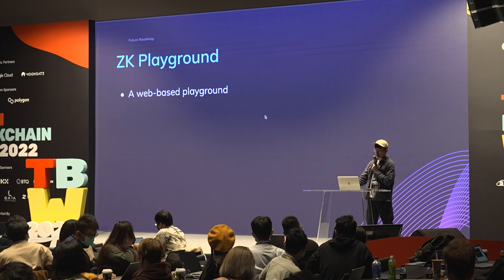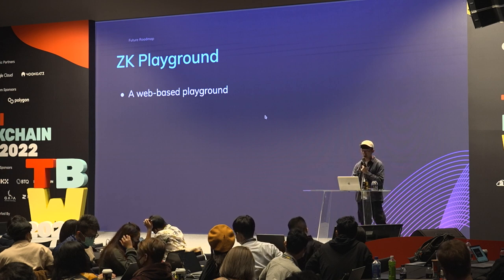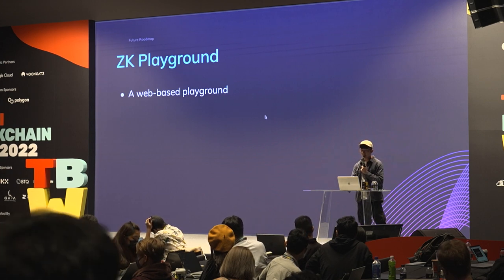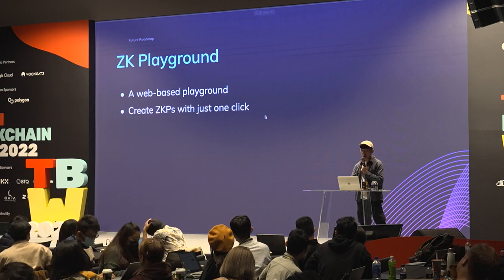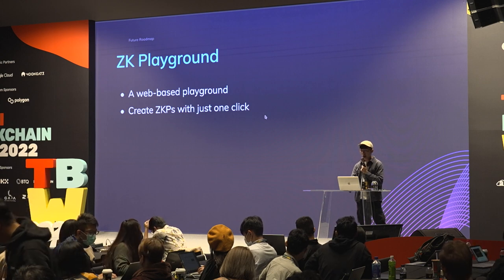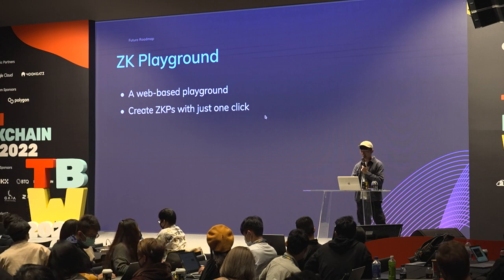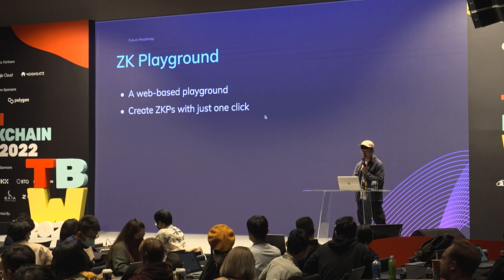Also on the roadmap is a ZK playground. If you've tried other DSLs like Circom or Kratist, there are existing ZK playgrounds that are really nice because they let you create ZKPs with just a few clicks. We want a web-based playground that allows developers to write Keylong in their browser and generate ZKPs with just one click.